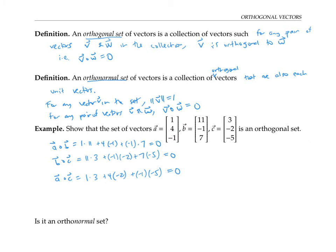So for any pair of vectors in the set, that pair is orthogonal to each other, and therefore we have an orthogonal set.